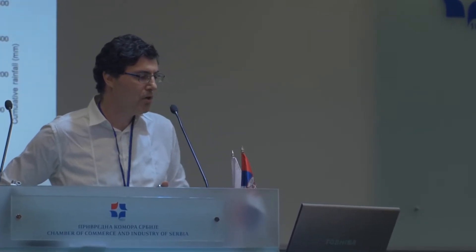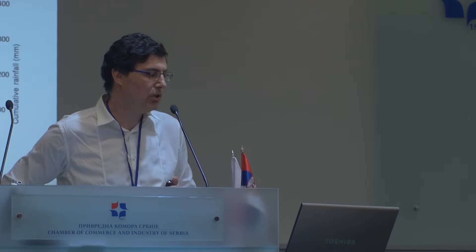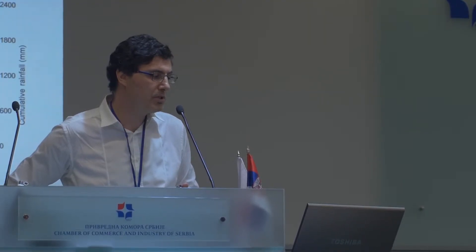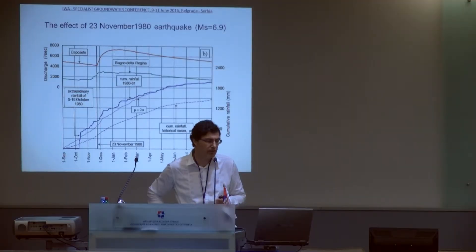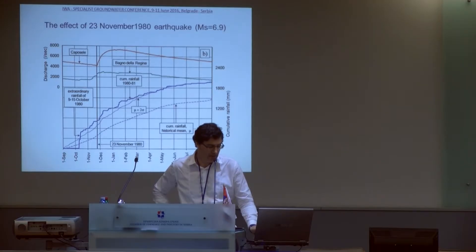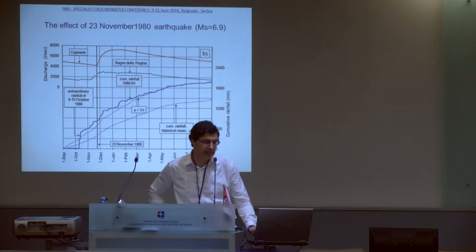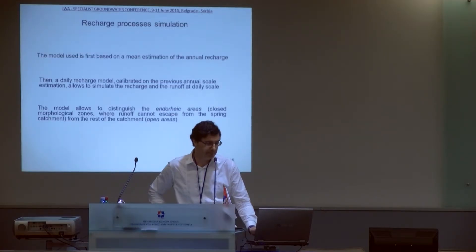Looking at the rainfall that occurred in that year compared with the historical mean, we can see that in October 1998, a large storm occurred. This storm probably caused the increase in discharge at Bagno della Reggina and other springs. Therefore, it is very difficult to use this data to draw conclusions about earthquake precursors.